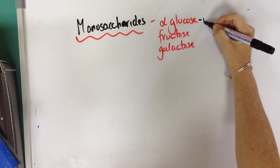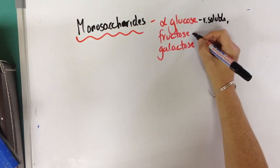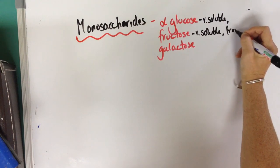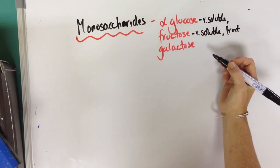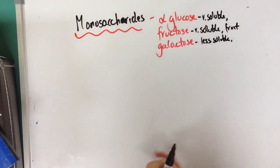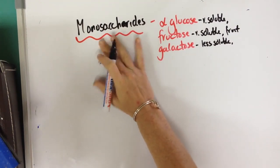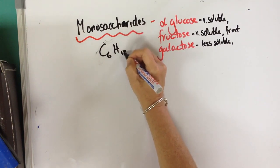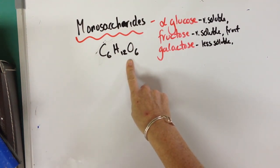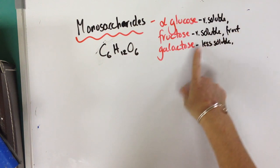Alpha glucose is a very soluble molecule. It's used for respiration and it's transported around animals. Fructose, again, extremely soluble, found in fruits, and sweeter than alpha glucose. Galactose is slightly less soluble, and it's used to make glycoproteins and glycolipids. Now, all of these have the same chemical formula. They're hexose sugars and they're C6H12O6, but they have different structures — they're actually bonded together differently. These structural isomers give rise to slightly different properties.